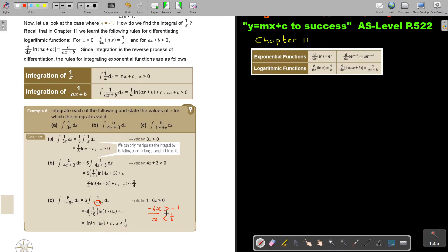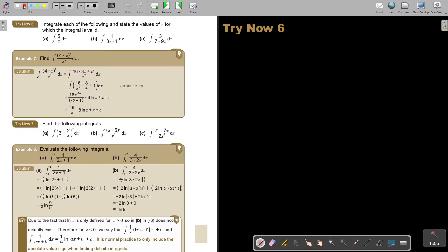I want you to stop the video and I want you to do number a and number c. You can continue the video as soon as you are finished. Number a: the integral of 5 over x dx. This one is going to be very easy. Rewrite it as 5 times 1 over x, and that's going to be 5 ln x plus c. And don't forget that x must be bigger than 0.